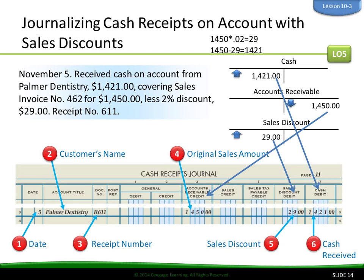Journalizing cash receipts on account with a sales discount. On November 5th, we received cash on account from Palmer Dentistry, covering sales invoice number 462 for $1,450 less 2%, which is $29, receipt number R611. We record the date, Palmer Dentistry, the cash amount, accounts receivable, and the discount. The accounts receivable column is credited for the full invoice amount, and the sales discount column shows the $29 discount, with cash debited for the net amount.